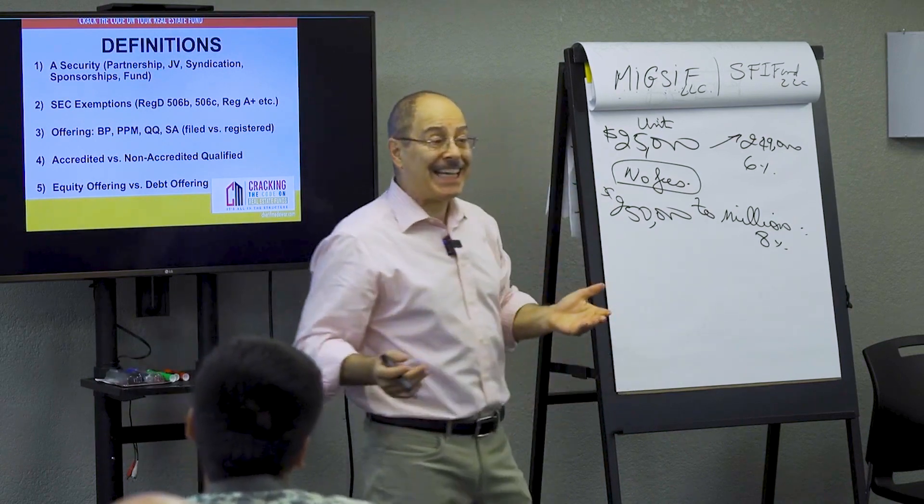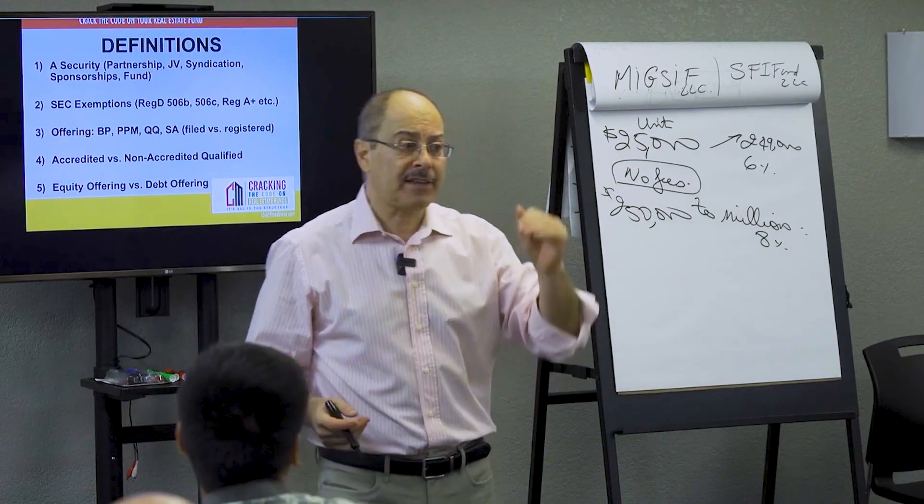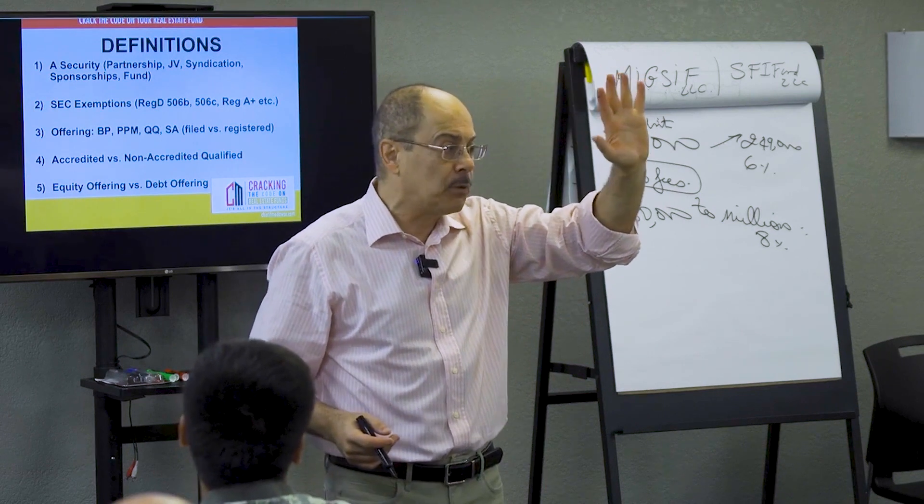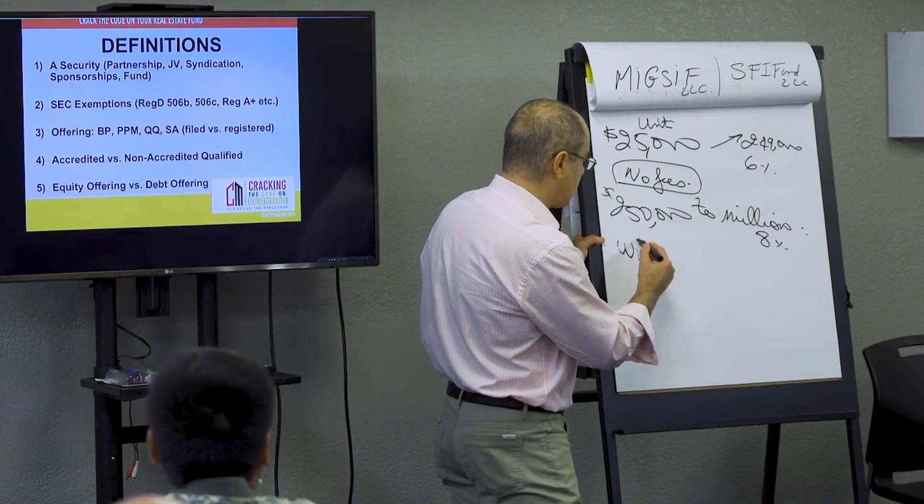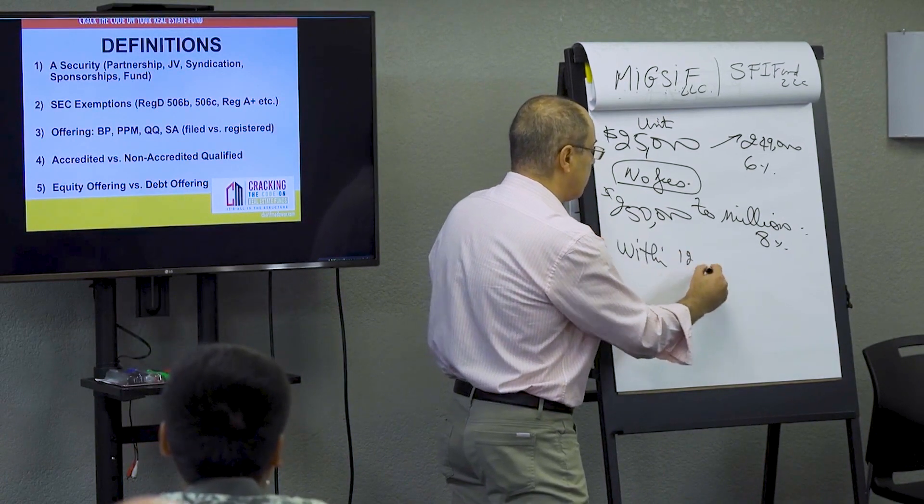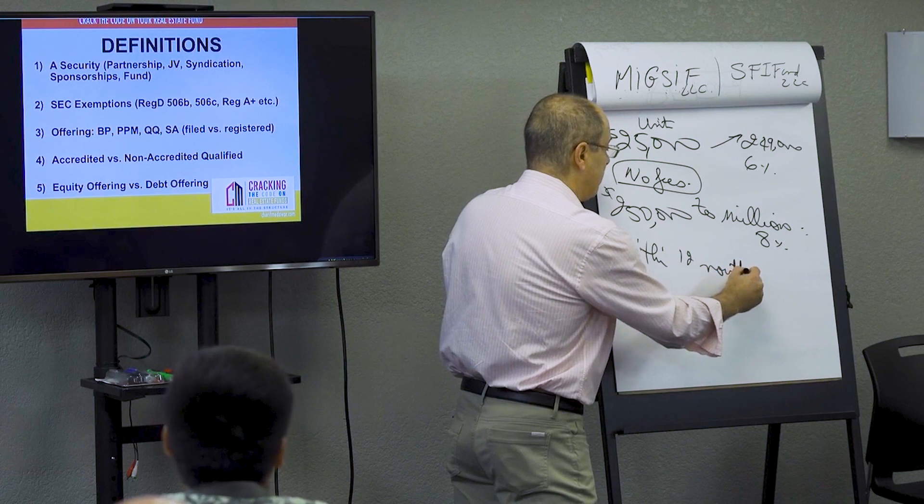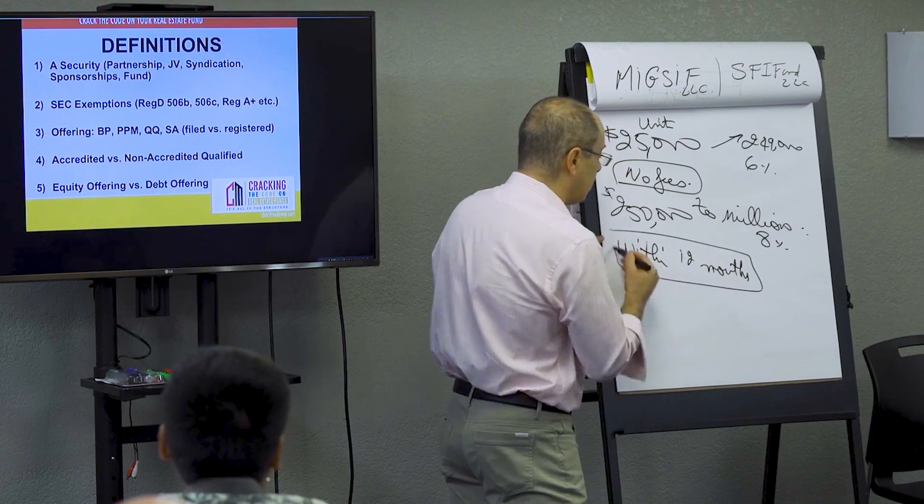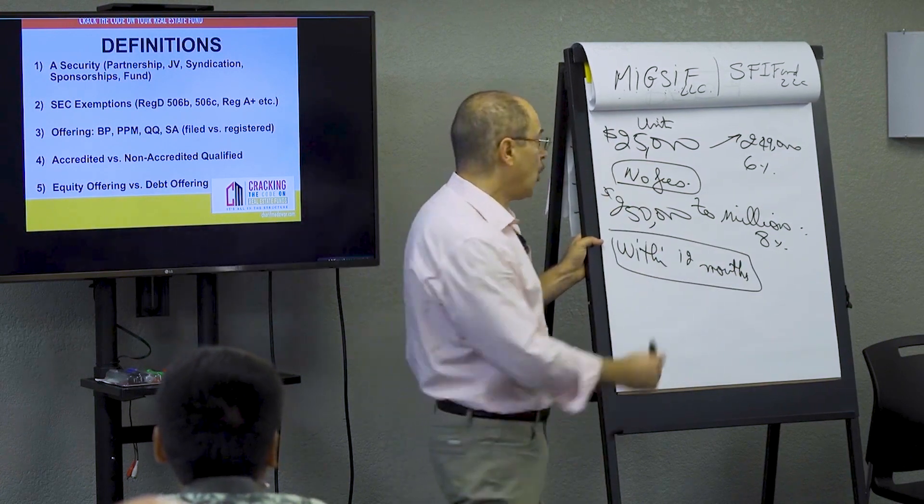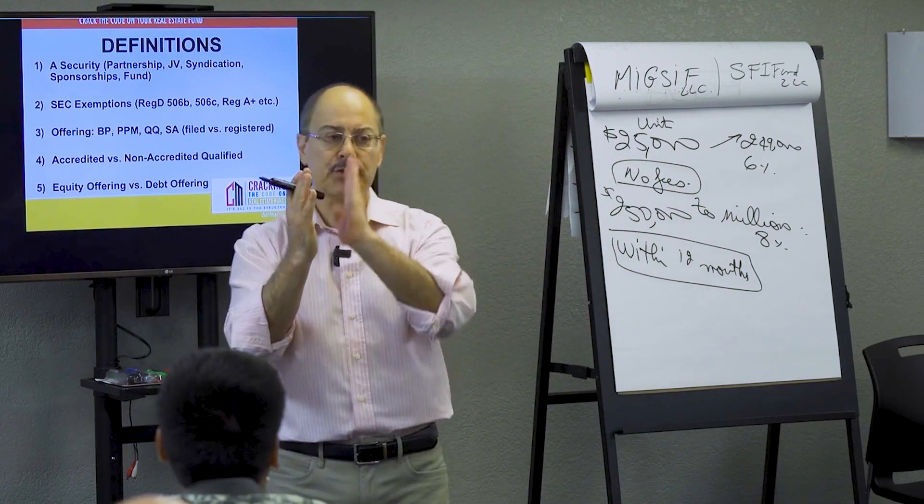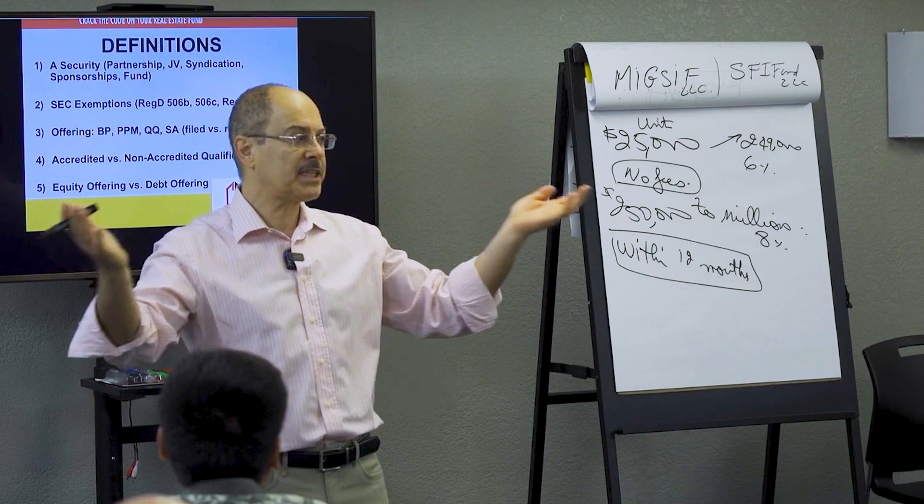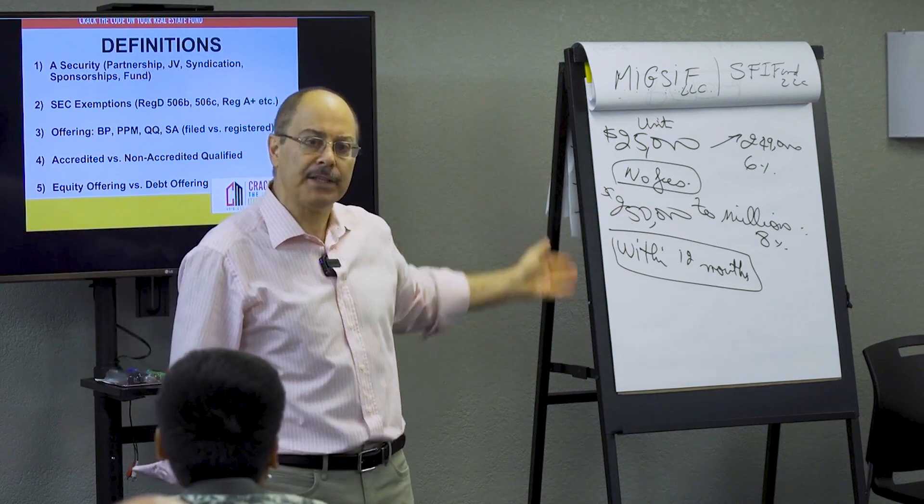Now, in a syndication, if people want out, they tell them you have to wait till we sell the building within five years. Am I right? Here I say, you want to cash out? You can cash out within 12 months notice. Just send me the notice by email and you can cash out 12 months. No fees on the cash out. All accrued interest. You put the money on Monday, you start accruing interest on Tuesday. You can cash out within 12 months. This is better than any bank in the US.